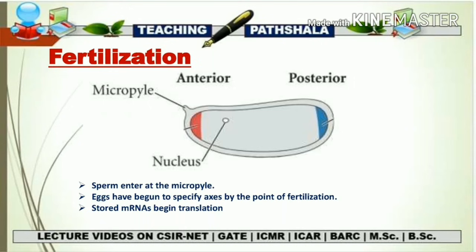Fertilization is an event after which eggs start to make a different kind of protein, which will be responsible for axis formation in Drosophila. This is the point where stored mRNA is going to be followed by translation, meaning the production of a protein.